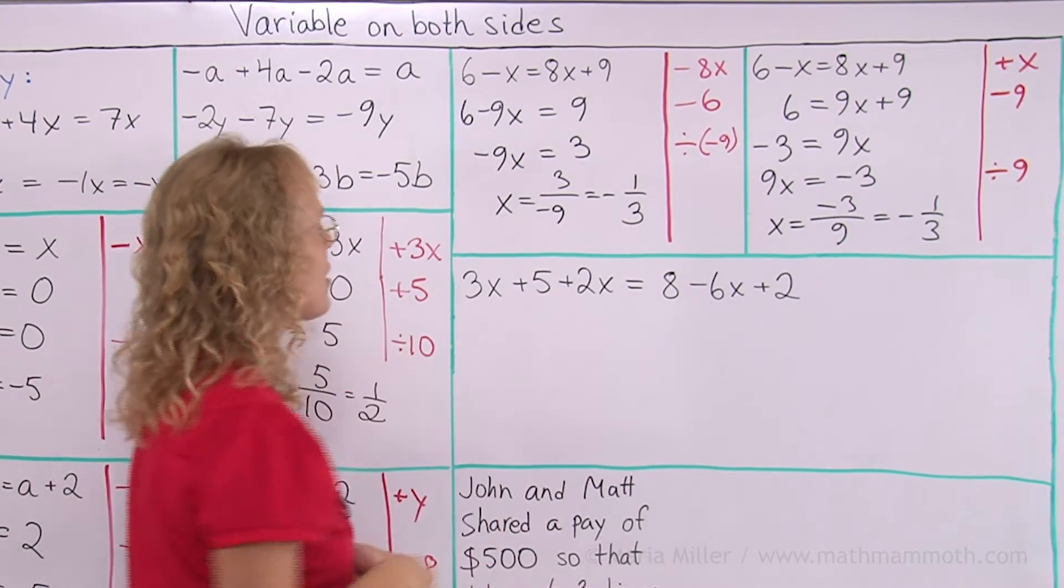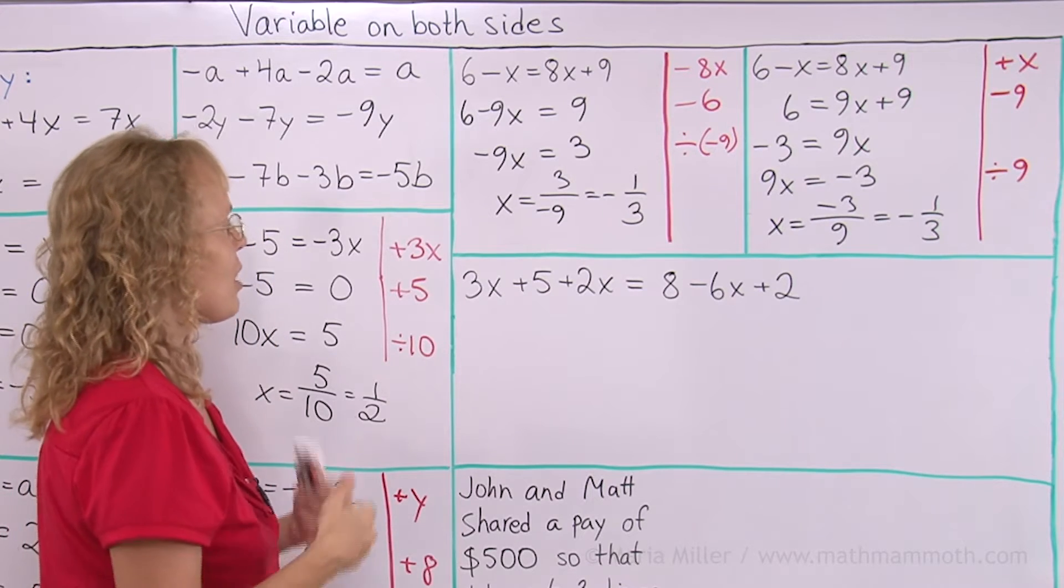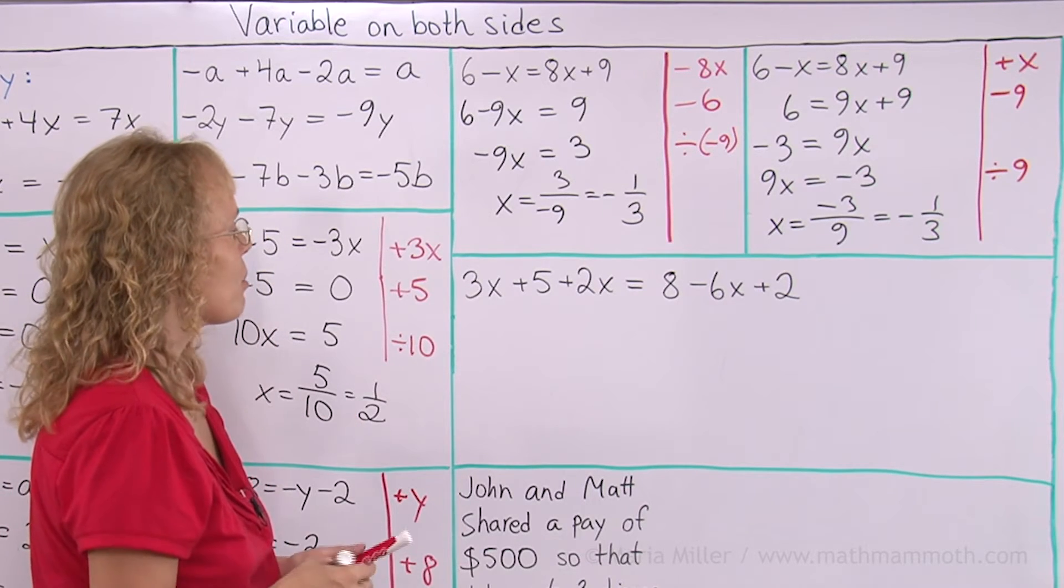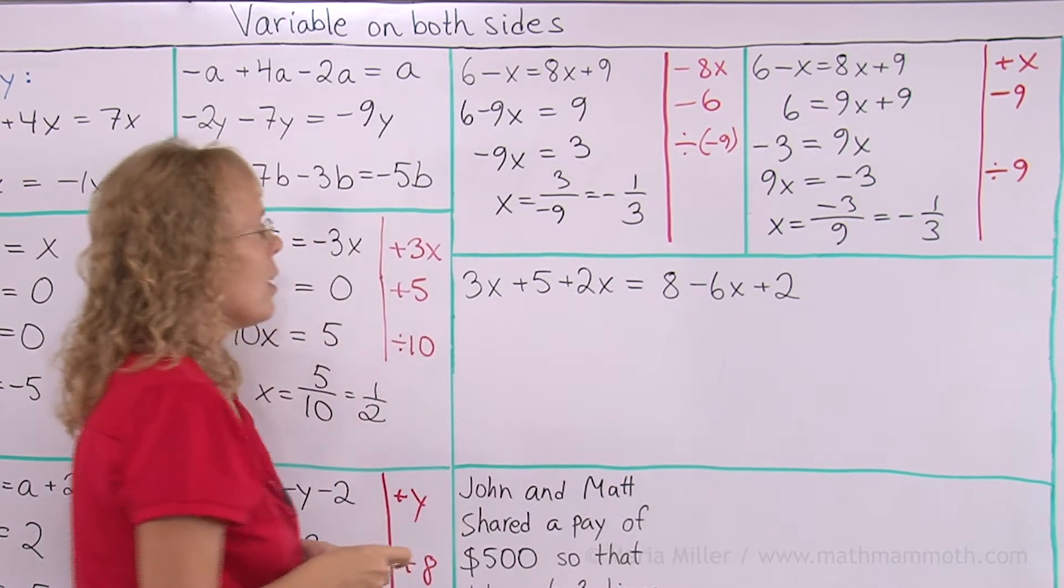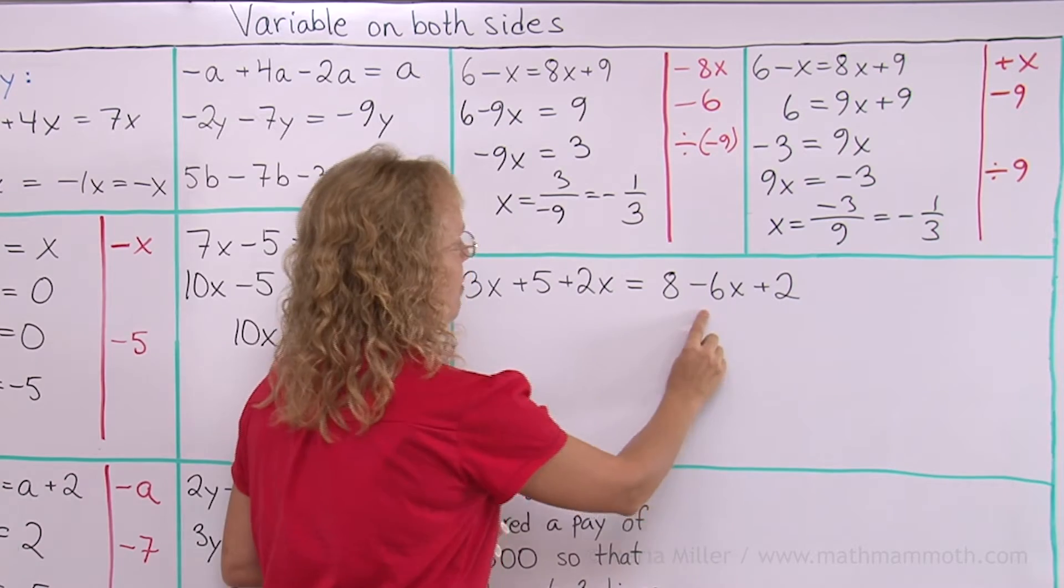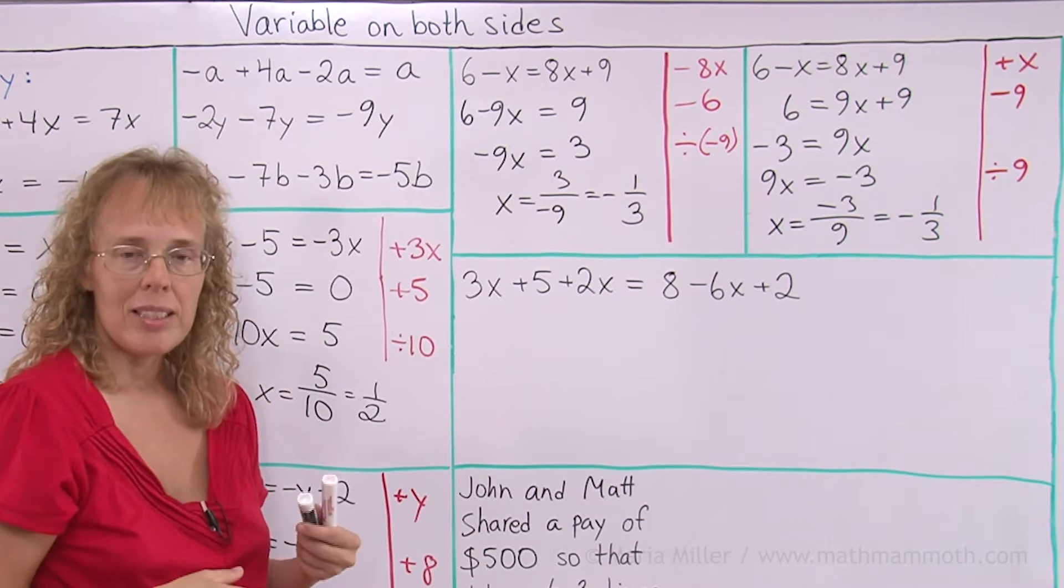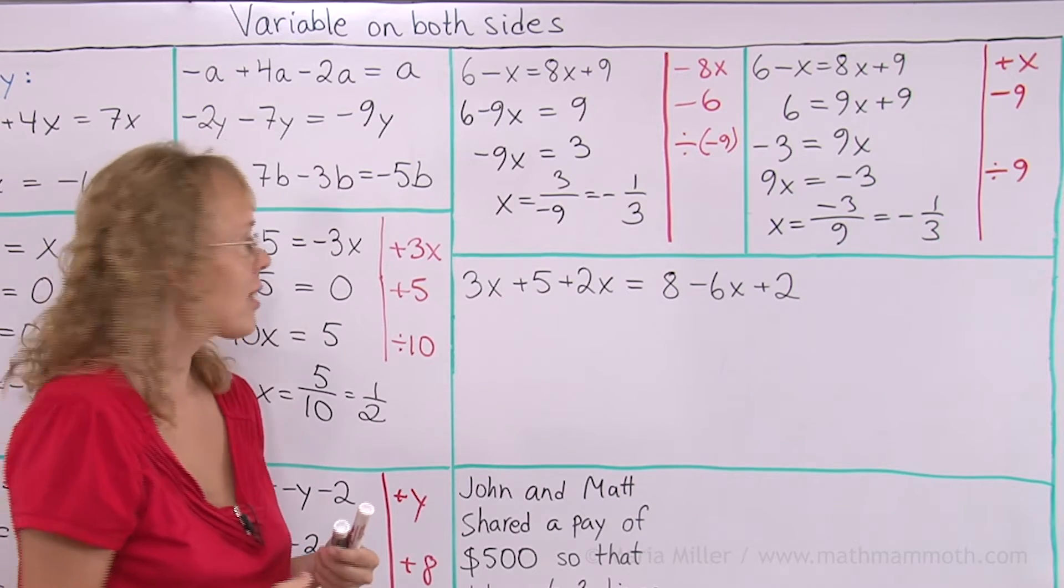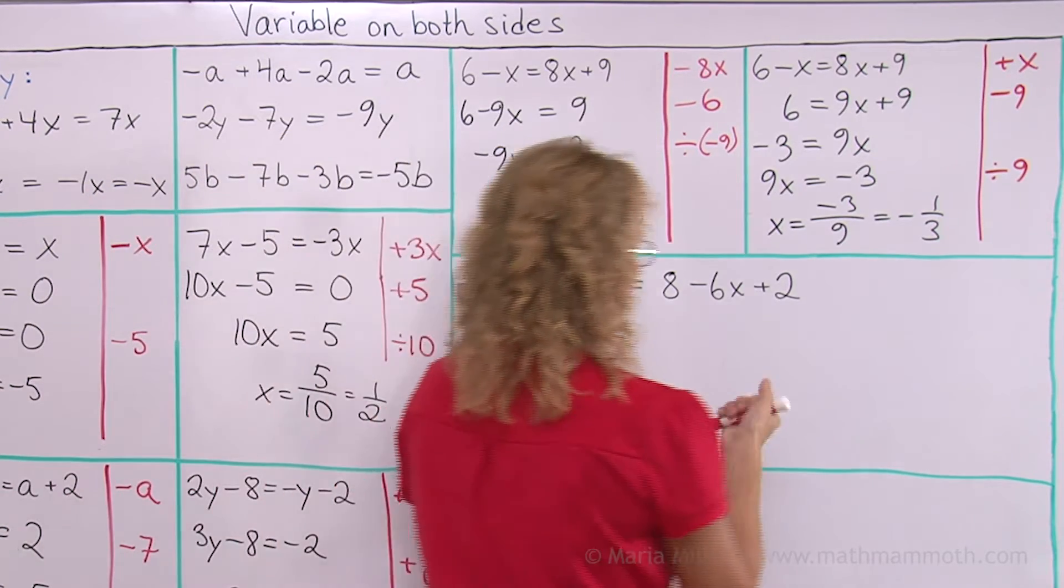Let's do one more that is a little bit more complicated, because there are more terms in it. It's not really more complicated, just more terms. And I have x's here and here, and here's an x term too. And look, here's a negative 6x. So maybe I want to get rid of the negative 6x, because that means that I will add 6x, so I will get positive x terms here. Let's add 6x.